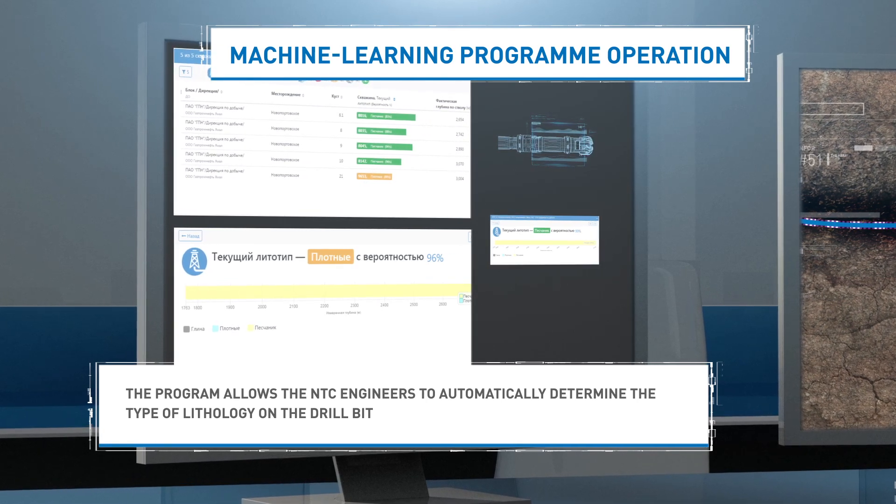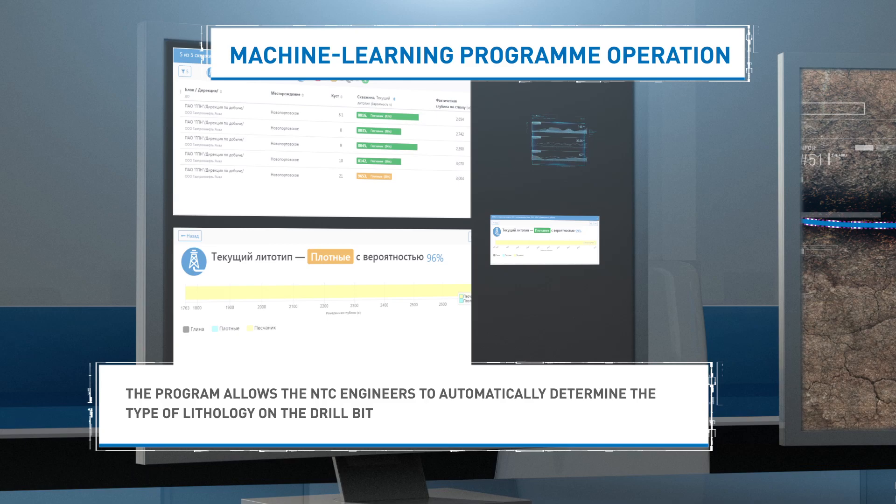By processing a huge volume of data, the program is able to predict any potential overshooting of productive strata.